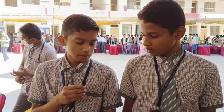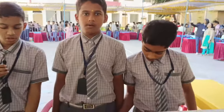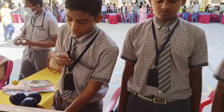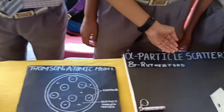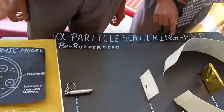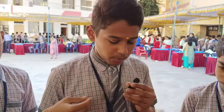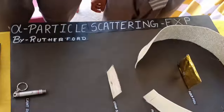Good morning. Today we are going to explain how Rutherford discovered that Thomson's atomic model was wrong and gave a new structure of the atom. This is known as the alpha particle scattering experiment. The components used for this experiment are a light source, lead sheet, fluorescent screen, and gold foil.